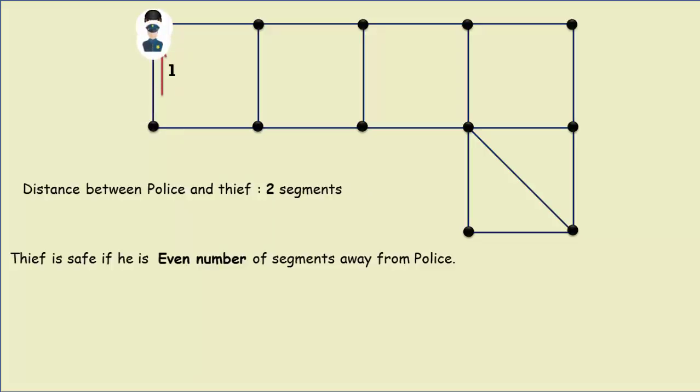And if the distance is a higher value of odd number of segments, such as 3 or 5, then in that case, the police can come closer to the thief until the distance becomes one segment. Then the thief can be caught.